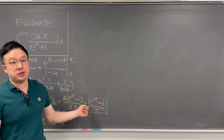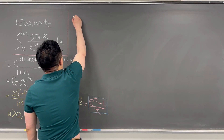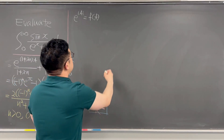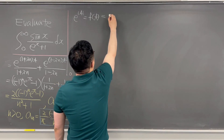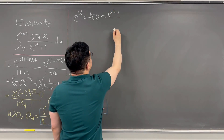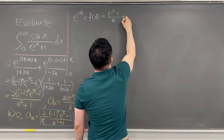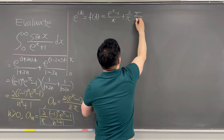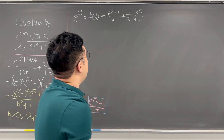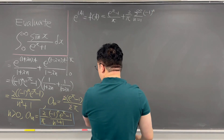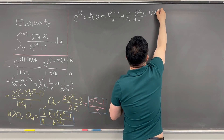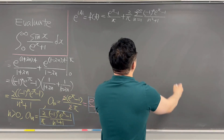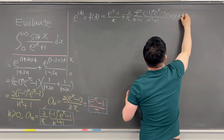Based on this, f of t, which is e to the power of absolute value of t, equals the first term e to the power of pi minus 1 over pi, plus 2 over pi times summation from n equal to 1 to infinity of negative 1 to the power of n times e to the power of pi minus 1, divided by n squared plus 1, times cosine of n times t. This is what we have.